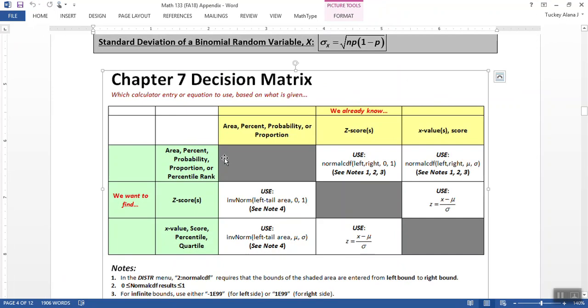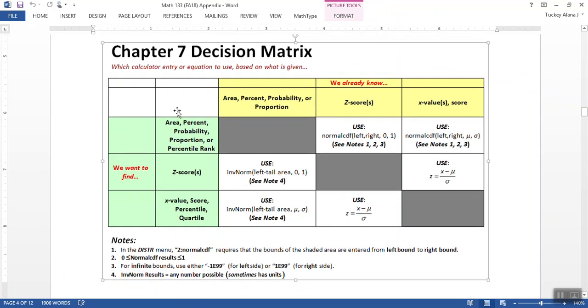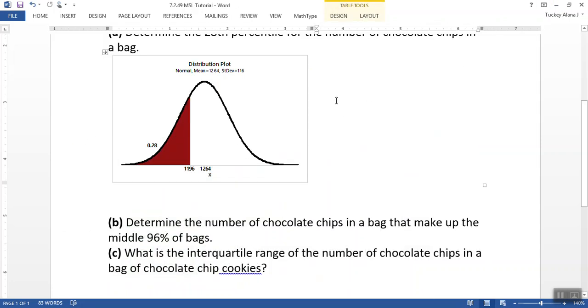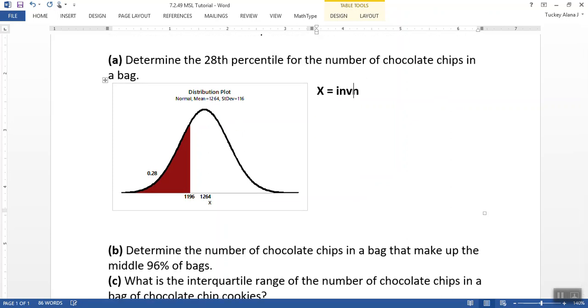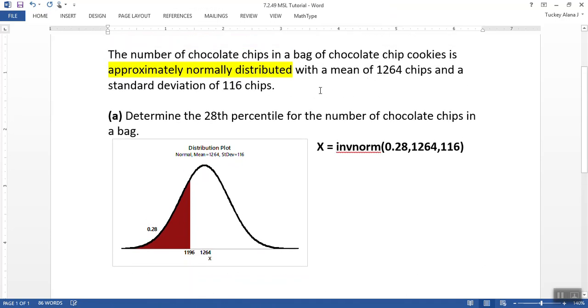Now let's go back to the decision matrix and think about this for a second. We want to find the percentile, which is down here on the bottom. So we're going to use inverse norm, left tail area, mu, sigma. So if I look at this, my x value is going to be inverse norm. The left tail area is 0.28, 1264, 116, because those are my mean and my standard deviation.